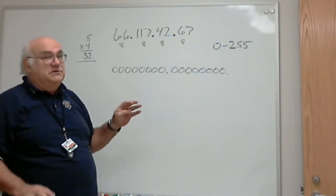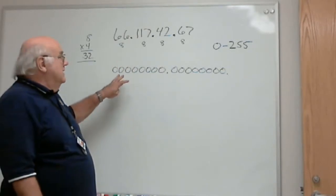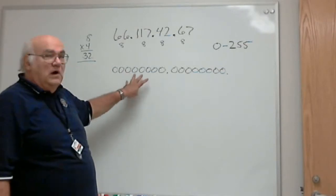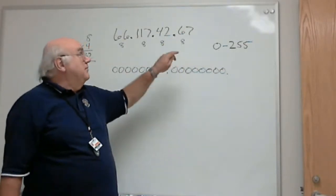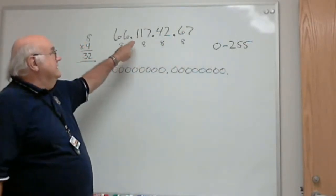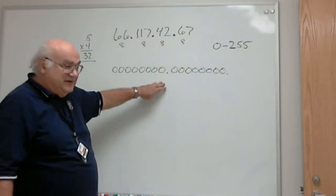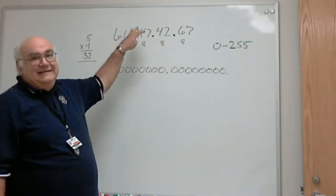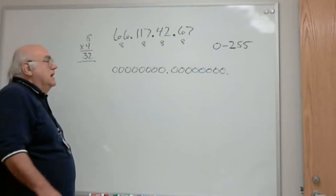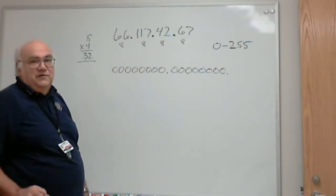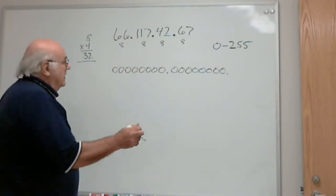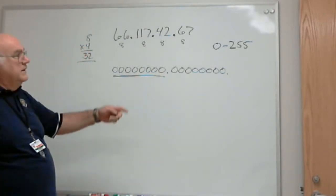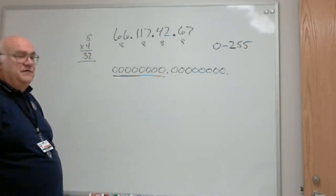We are using four bytes or four eight-bit groups to represent these, or we're representing these four eight-bit groups by this dotted decimal system. So, like I said, zero to 255. Zero is obvious.